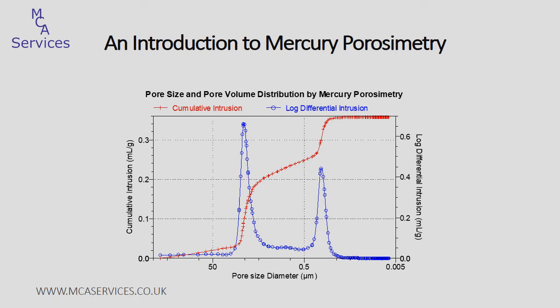Mercury porosimetry is an analytical technique that provides the user with information on porosity. It covers pore sizes, pore volumes, and pore areas within a solid sample. With some additional steps to the analysis, the technique can also be used to calculate bulk density, skeletal density, and porosity. And it can even be extended to measure permeability, pore tortuosity, and sample compressibility.